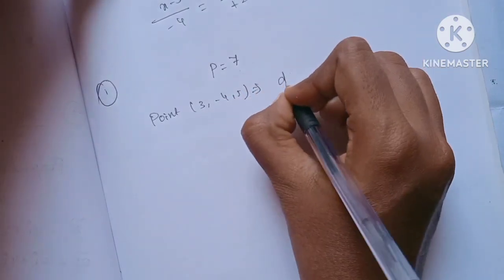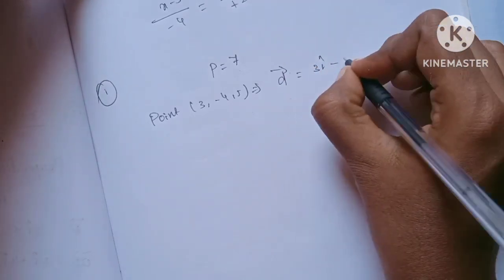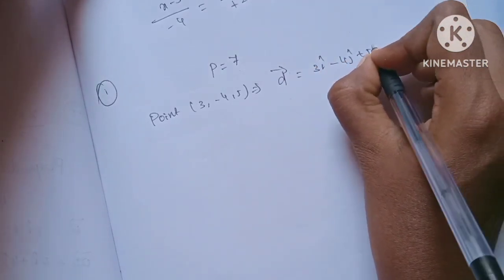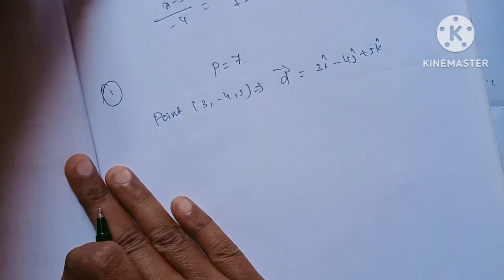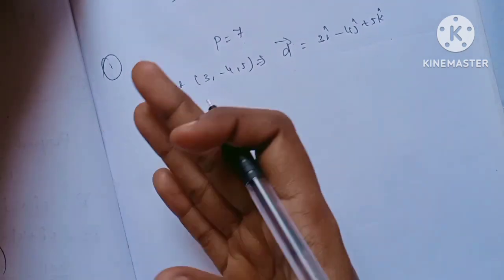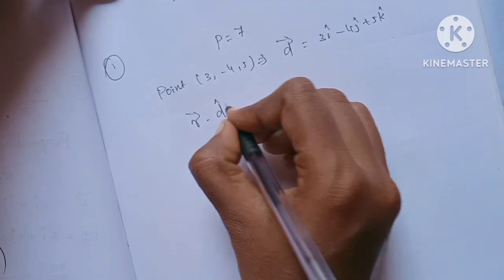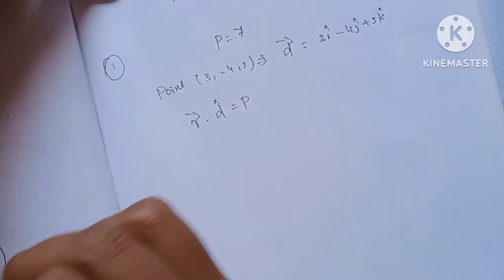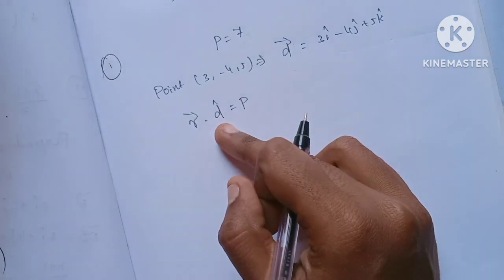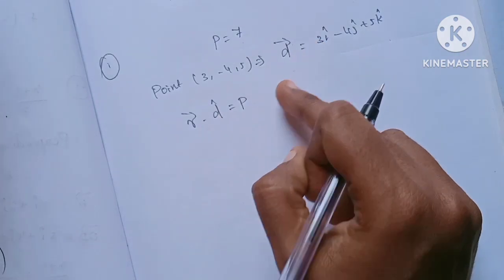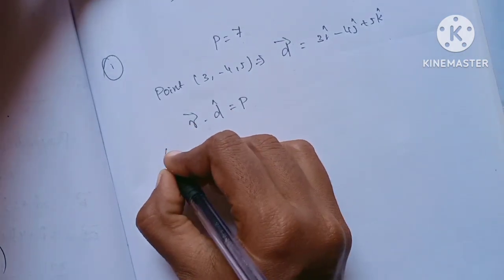The vector form is 3i - 4j + 5k. Now for the vector equation, we use the formula: R vector dot d cap equals P. We know P, and we know the D vector, so we first need to find d cap.